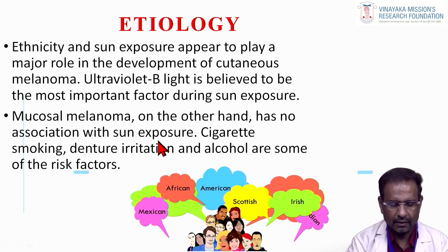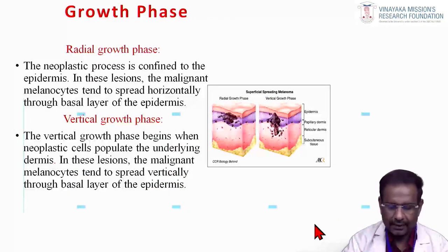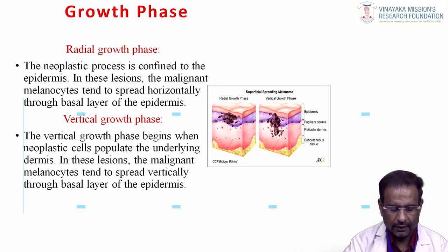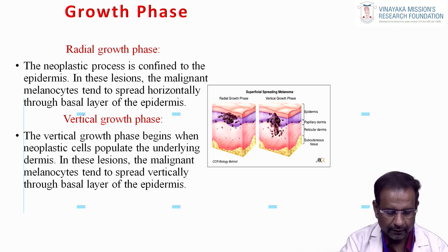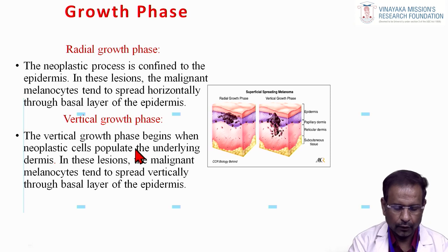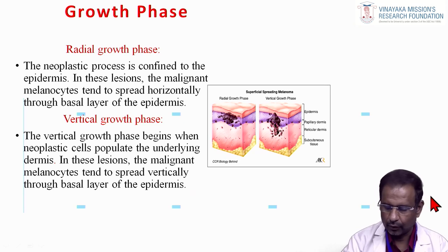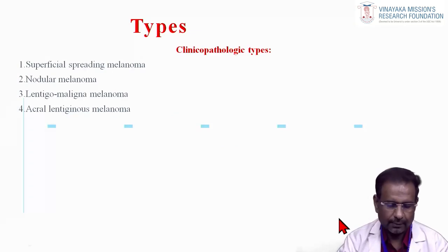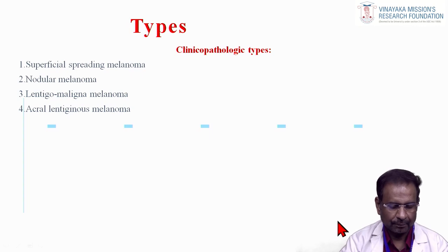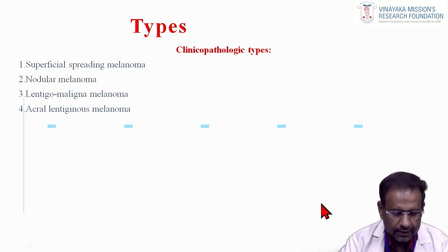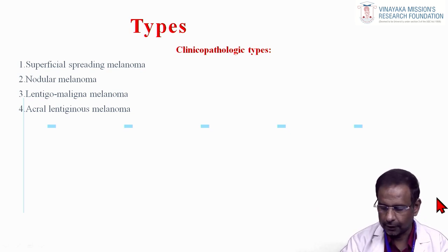Melanoma has two growth phases: radial growth phase, where the tumor spreads horizontally, and vertical growth phase, where the tumor invades deeper structures. The vertical growth phase begins when neoplastic cells populate the underlying dermis, and malignant melanocytes tend to spread vertically through the base layer of the epidermis. The four clinical-pathological types of melanoma are: superficial spreading melanoma, nodular melanoma, lentigo maligna melanoma, and acral lentiginous melanoma.